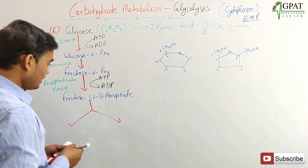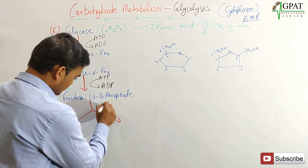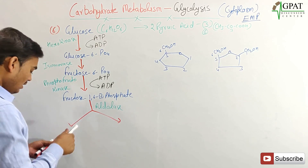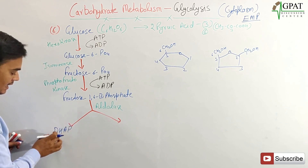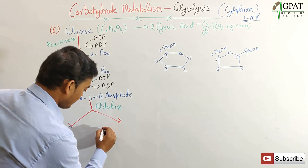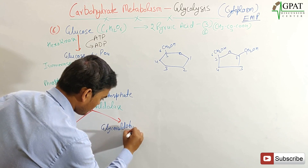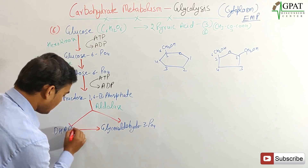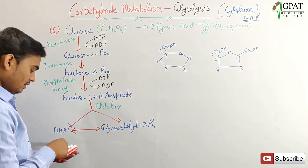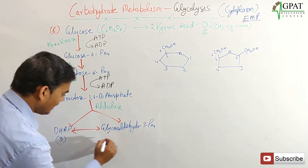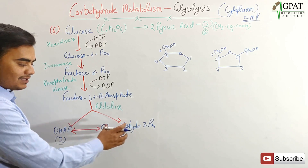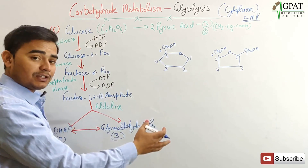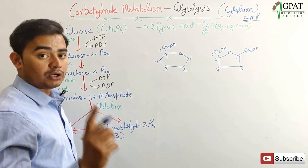The enzyme aldolase breaks down fructose-1,6-bisphosphate into two three-carbon compounds: DHAP (dihydroxyacetone phosphate) and glyceraldehyde-3-phosphate. These two compounds are interconverted to each other. Both DHAP and glyceraldehyde-3-phosphate have three carbons. From this point onward, each subsequent step occurs twice per glucose molecule — once for each three-carbon compound.